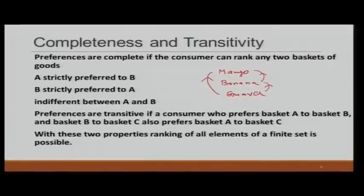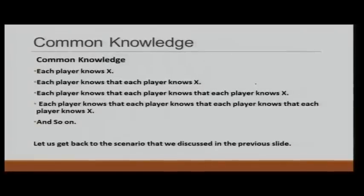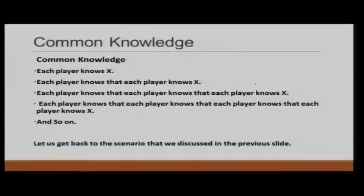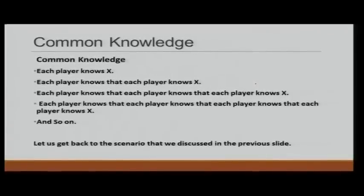The second assumption required is common knowledge. What is common knowledge? Let us say there is a fact X that is known by each player — each player knows X. The next requirement for common knowledge is that each player knows that each player knows X. And it does not stop there — each player knows that each player knows that each player knows X. We have to keep going to infinity. We cannot stop at any finite level.